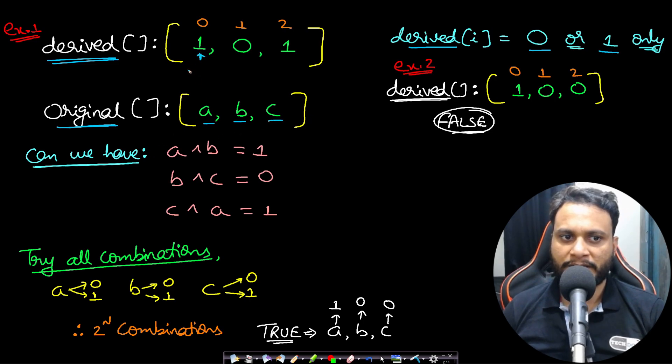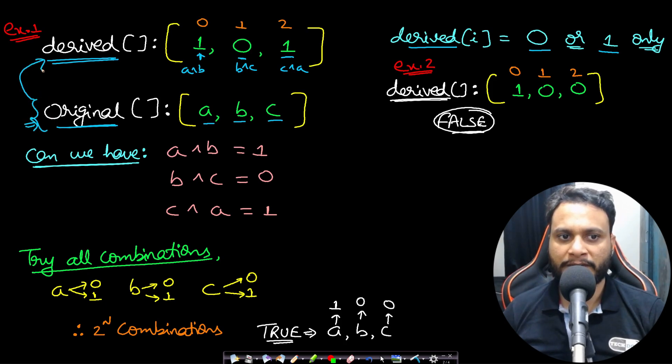So this 1 is actually denoting a XOR b. This 0 is denoted by b XOR c, and this 1 is denoted by c XOR a. Now the problem here is asking: is there any original array which can lead to the derived array if you follow this kind of formulation?